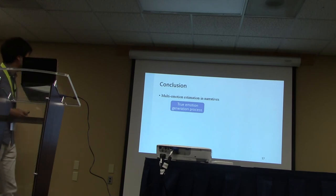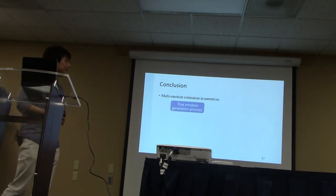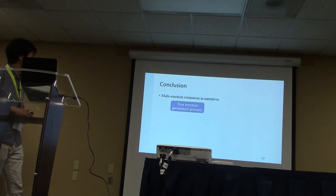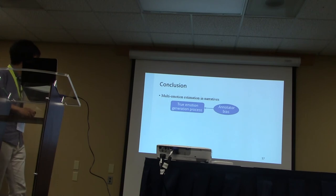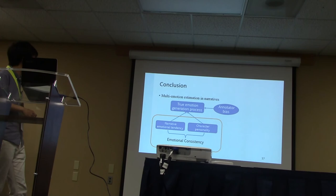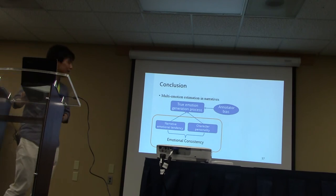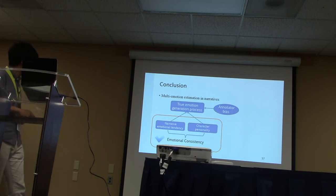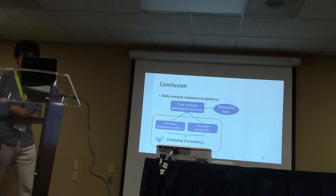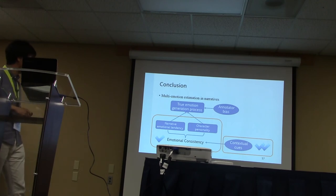In summary, I have talked about the problem of multi-emotion estimation for narrative sentences from crowdsourced annotations. On the basis of the domain-independent multi-label estimation model, which only considers annotator bias, we propose incorporating emotional consistency including narrative emotional tendency and character personality. The experimental results show that incorporating emotional consistency is effective for multi-emotion estimation, especially when the consistency is estimated using contextual cues.